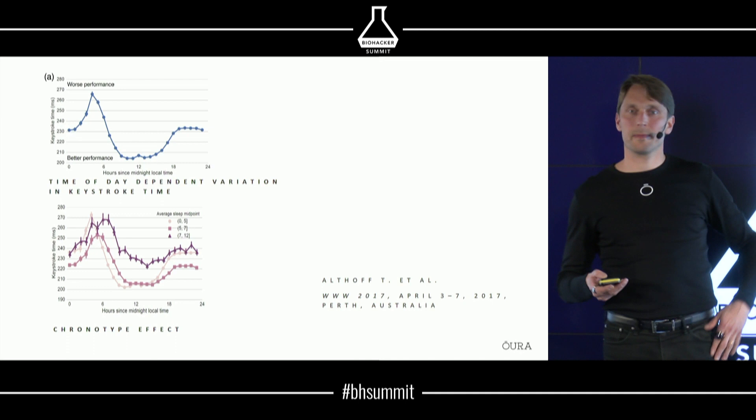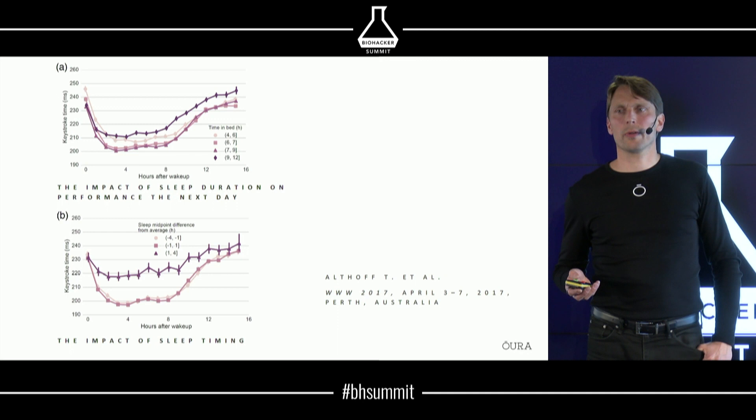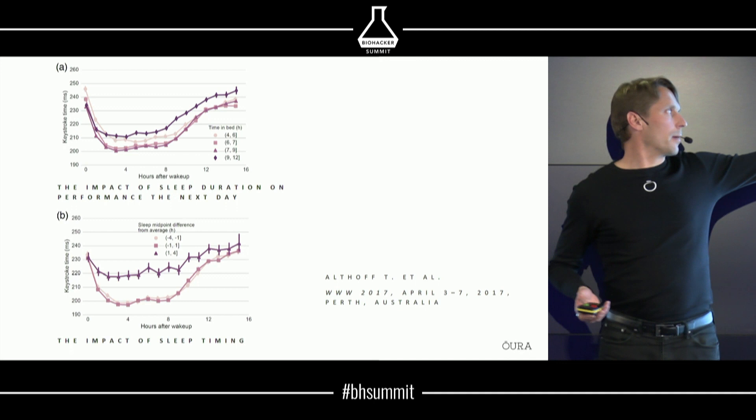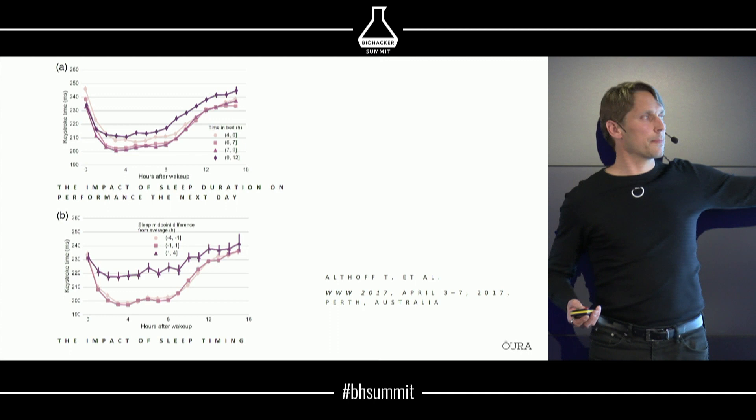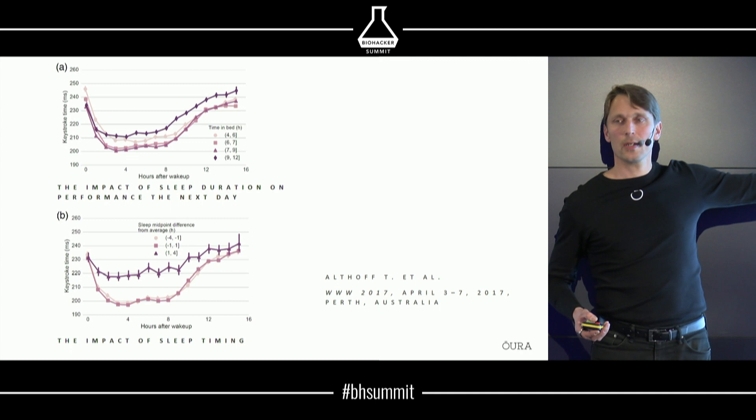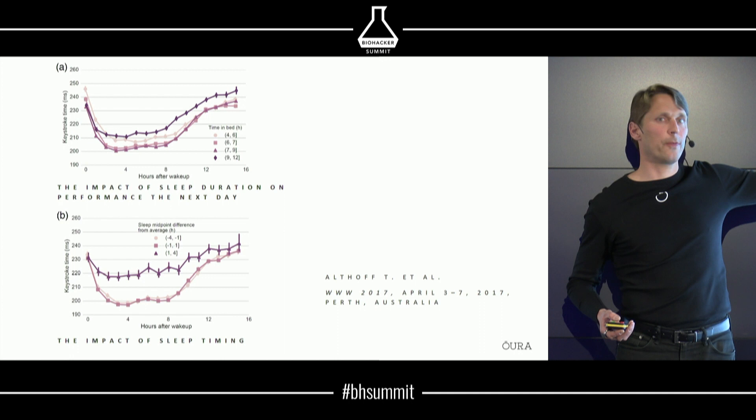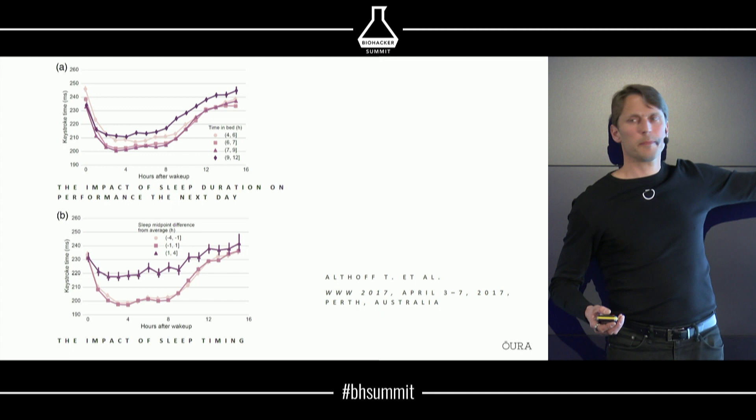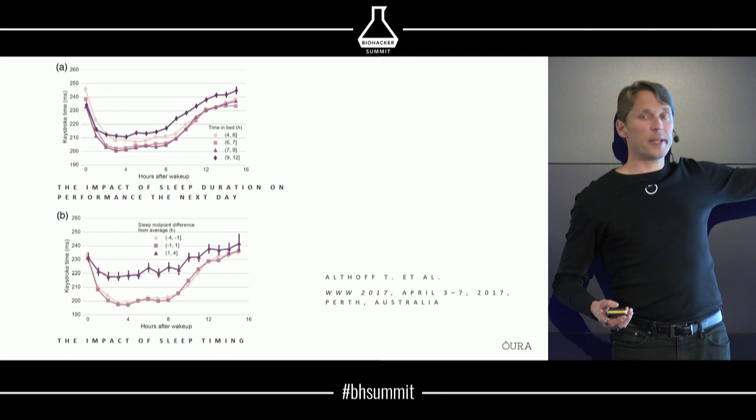It's also important to know about consistency. If you have a normal seven-to-nine hour sleep duration you get the highest performance — you are typing the fastest. If you have only slightly shorter sleep, performance is hardly affected at all. If you have clearly shorter sleep of four to six hours, it's slightly reduced. But if you then make a compensatory night and sleep nine to twelve hours, the performance goes down.